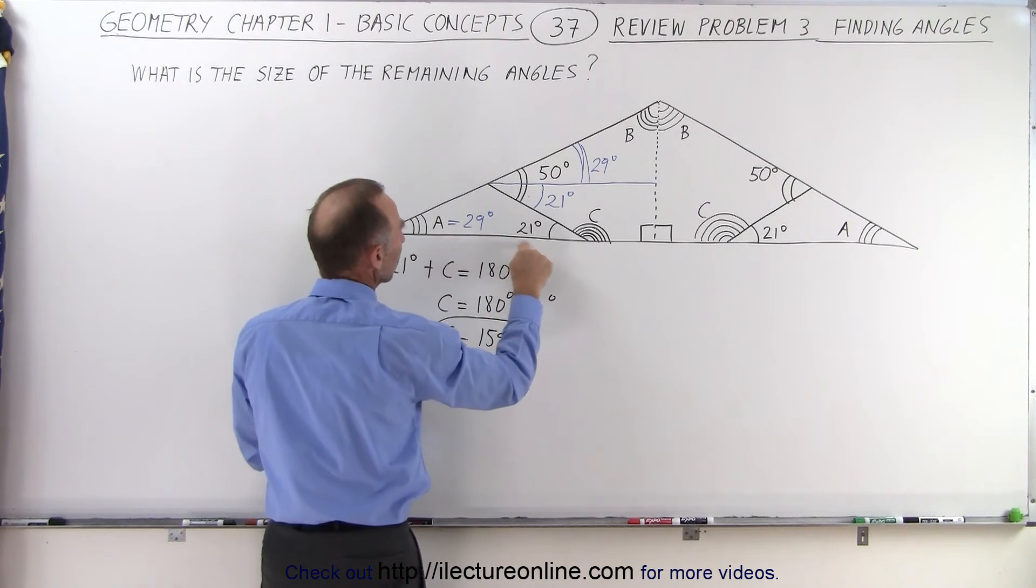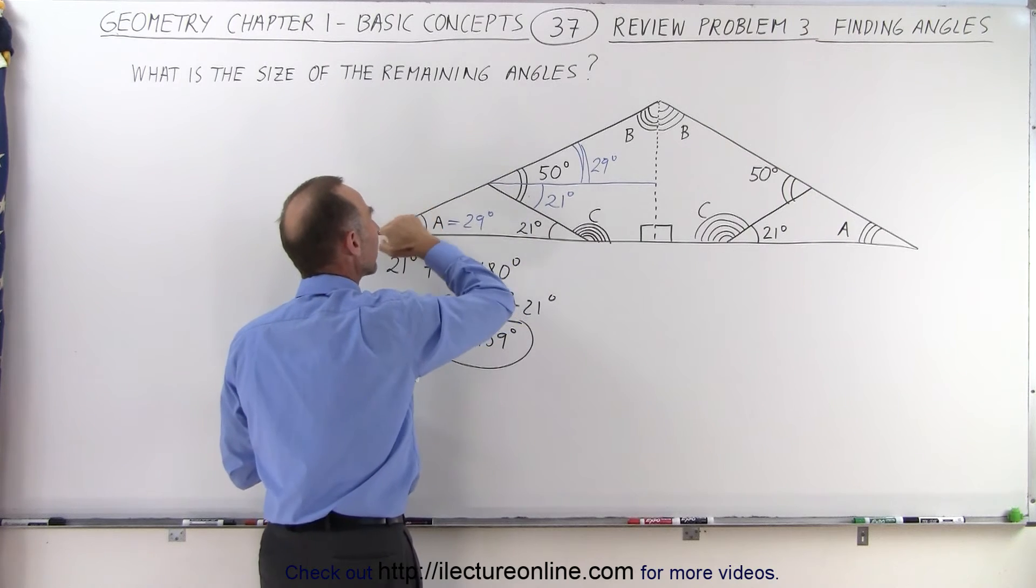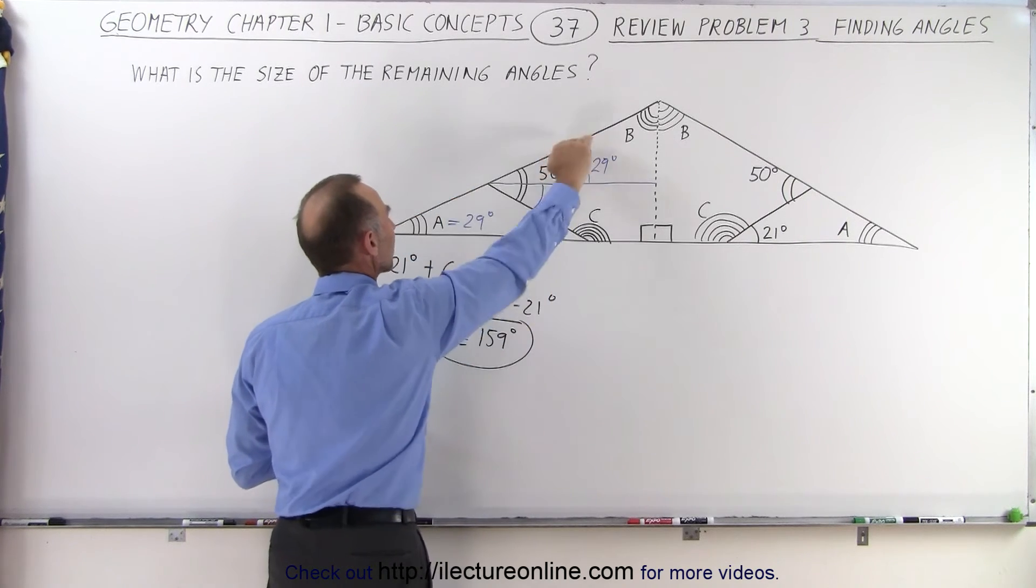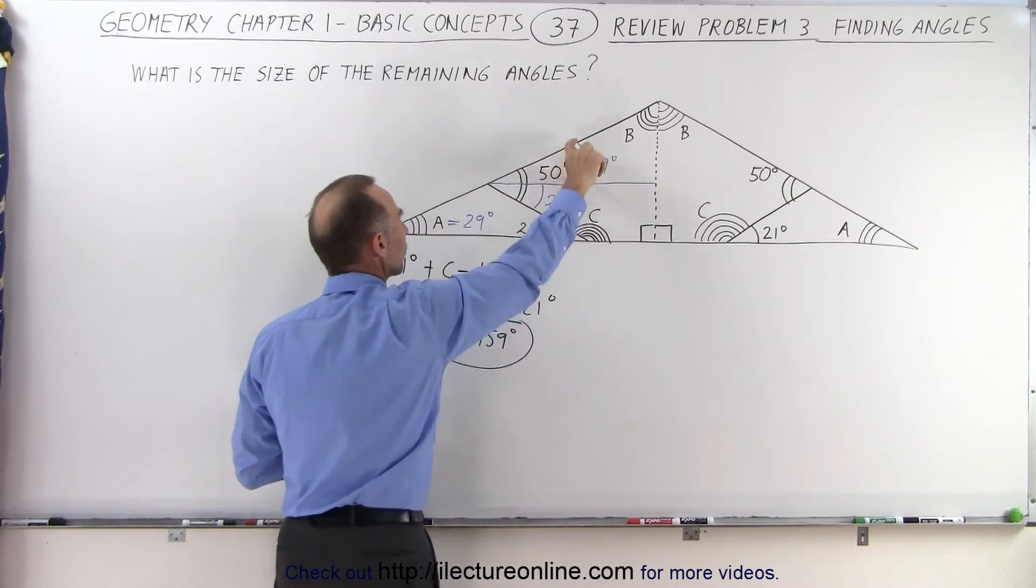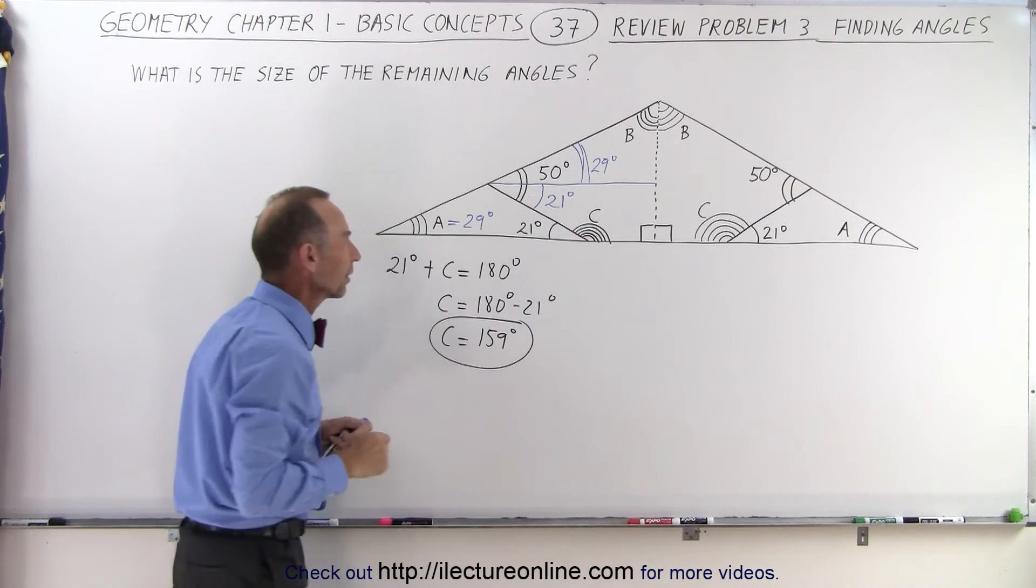Again, this line here is parallel to this line, and then the other side of the angle is the same line for both of these two angles. So this 29 degrees must be equal to this 29 degrees.